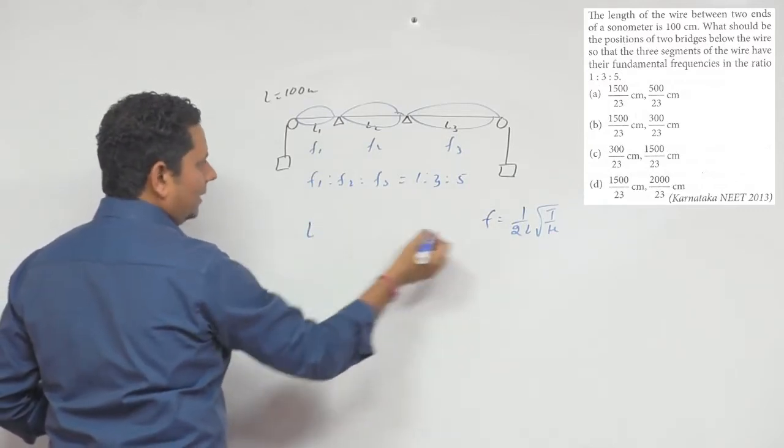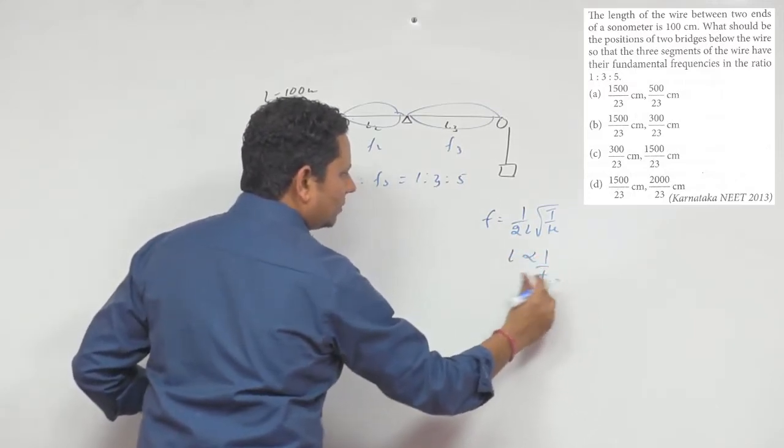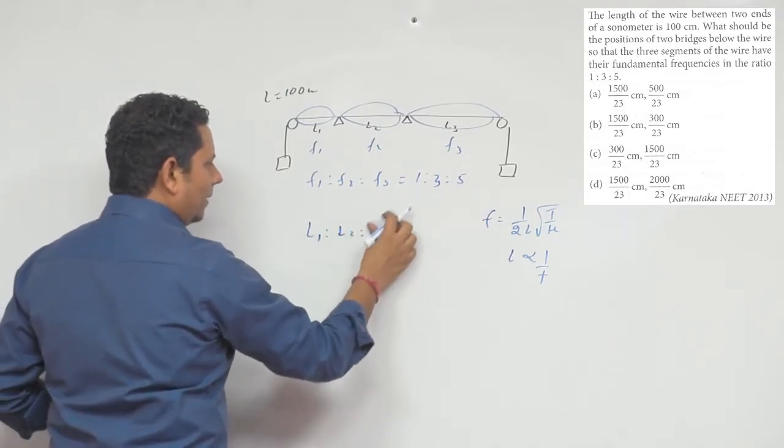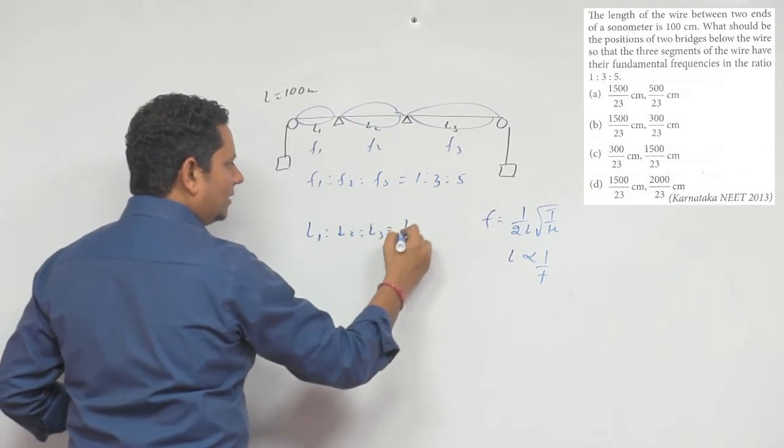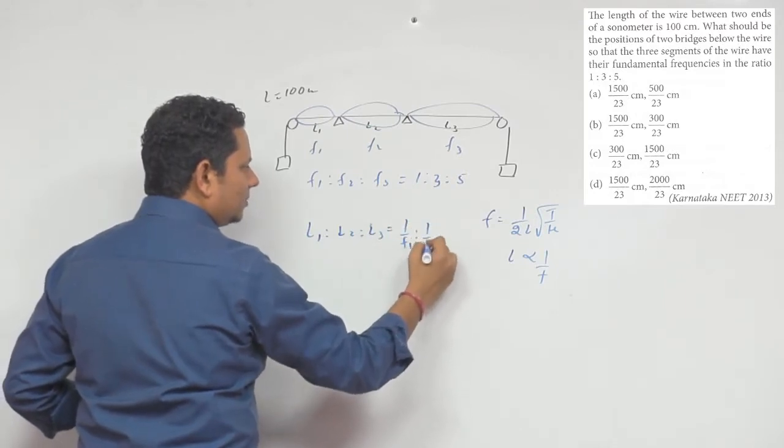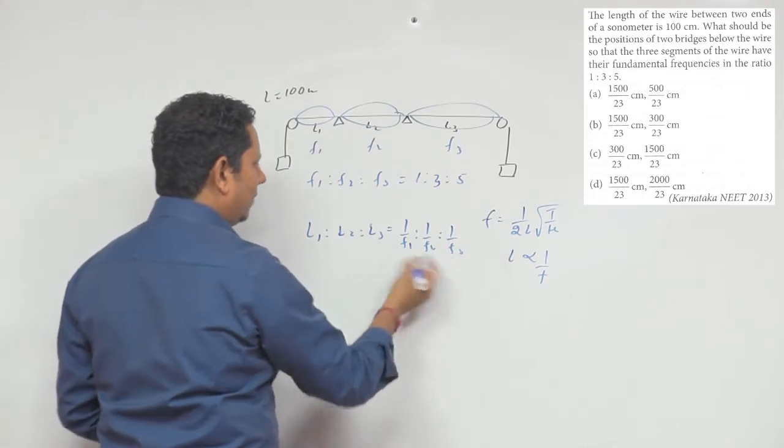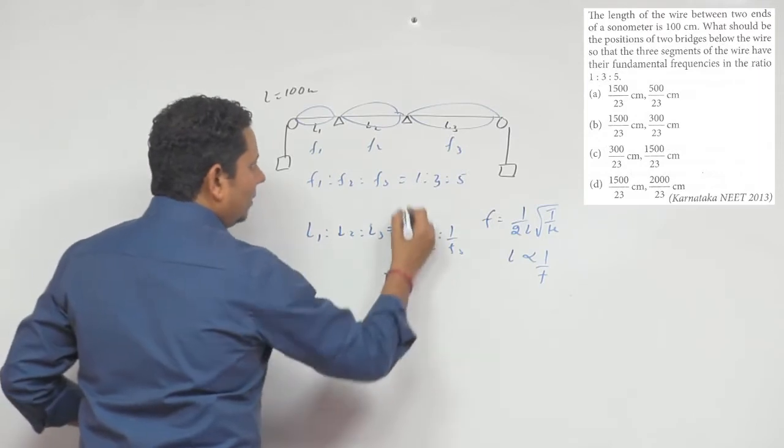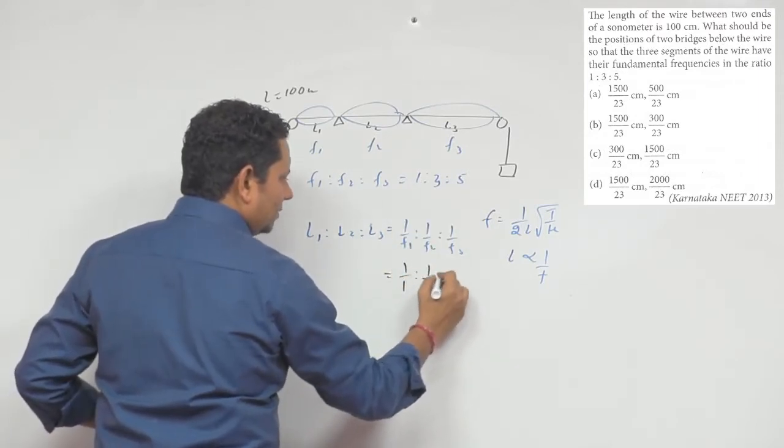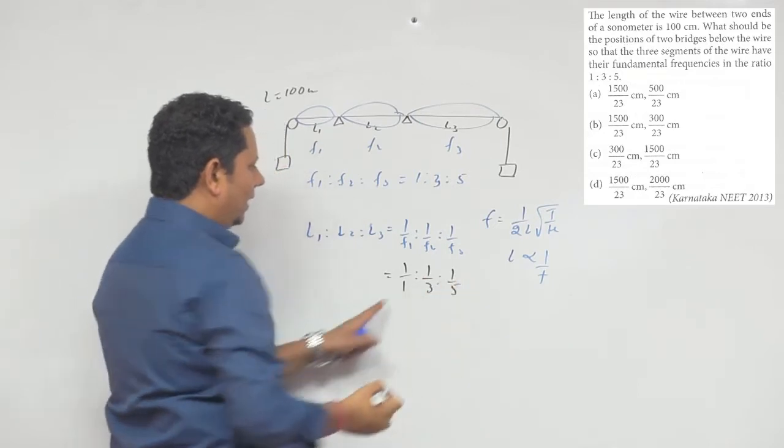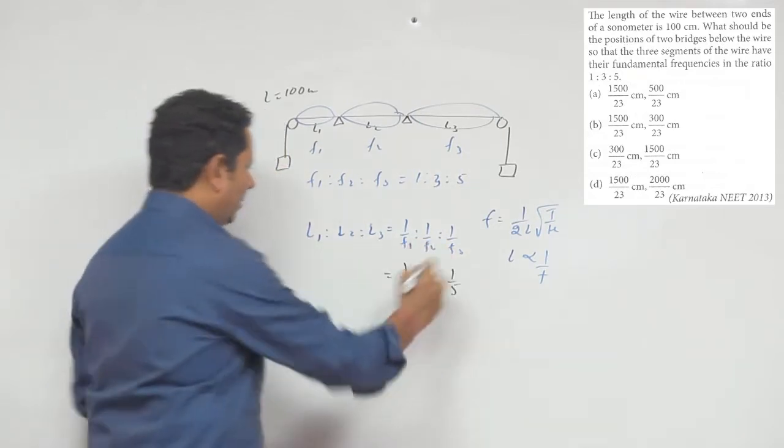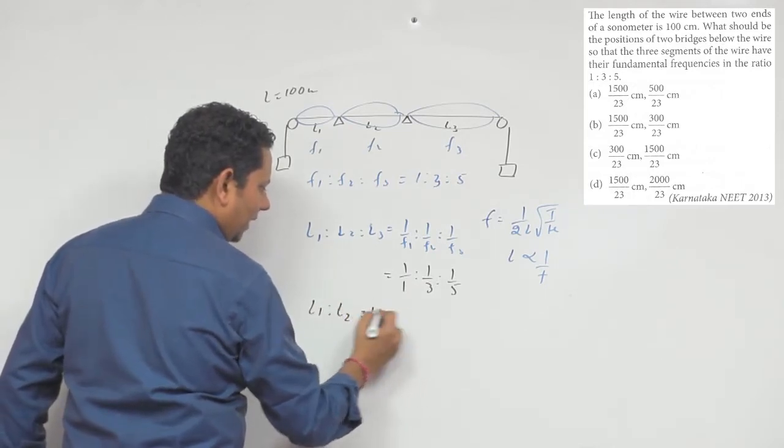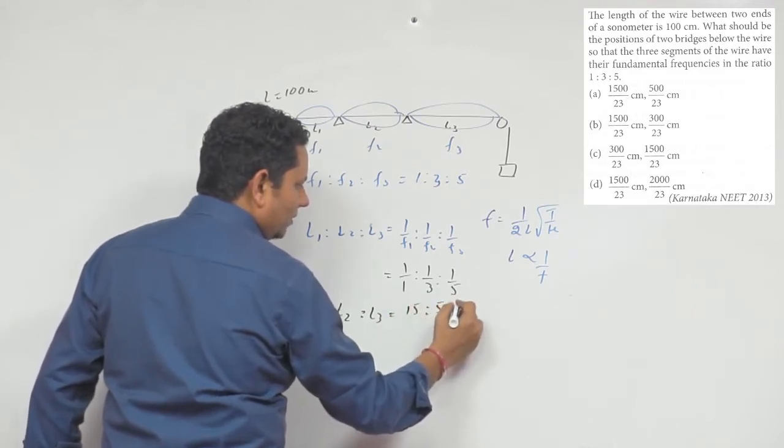1 by L. L is directly inversely proportional to frequency. So, 1 by F1, 1 by F2, 1 by F3. L1 to L2 to L3, this will be equal to 1 is to 1 divided by 3 is to 1 divided by 5. So, L1 is to L2 is to L3 is 15 is to 5 is to 3.